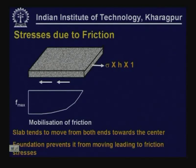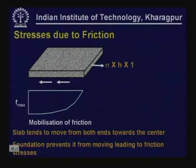The slabs tend to move from both ends towards the center. Foundation prevents it from moving, leading to frictional stresses. The restraint provided by the foundation to the movement of the slab is the reason why stresses are going to be caused. Normally we are concerned about the contraction of the slab because of reduction in temperature being restrained by the foundation, so the friction is mobilized there and the corresponding stresses are going to be generated in the slab.